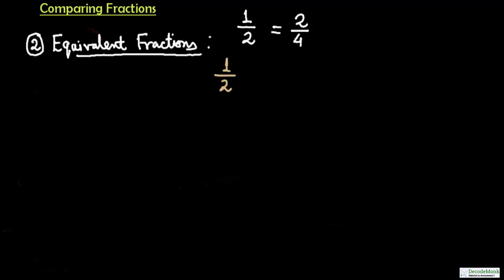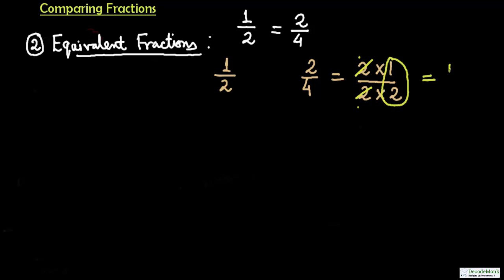On one side we have 1 upon 2, and on the other side we have 2 by 4. We can write 2 by 4 as 2 multiplied by 1 over 2 multiplied by 2. This is basically a division — we cancel out the common factor 2. So 2 cancels 2, and what remains is 1 by 2. This proves that 1 upon 2 equals 2 upon 4.